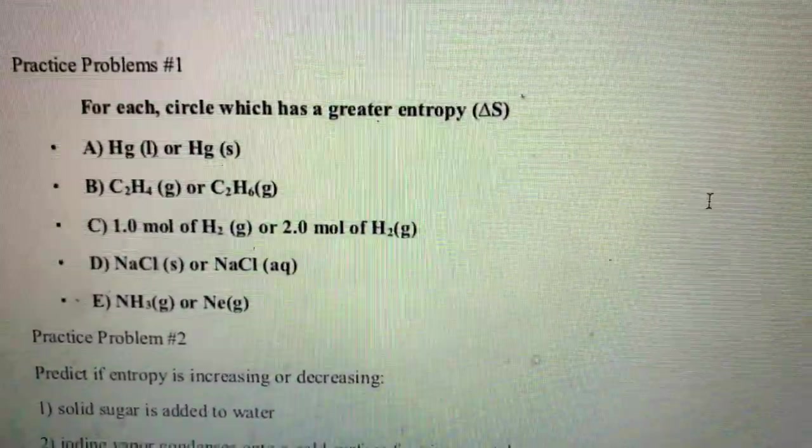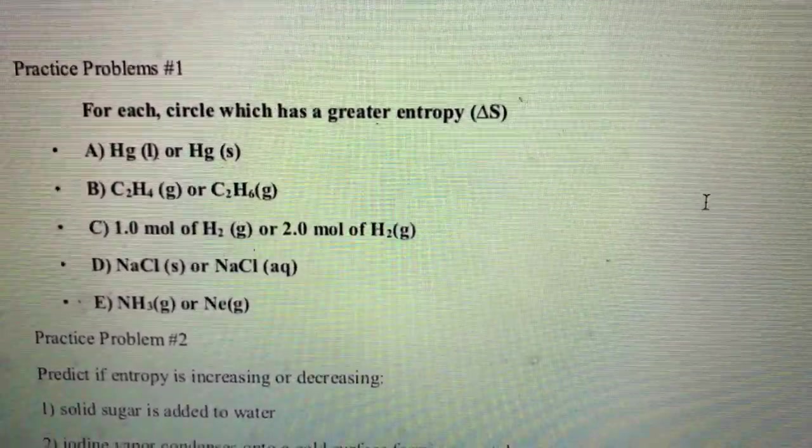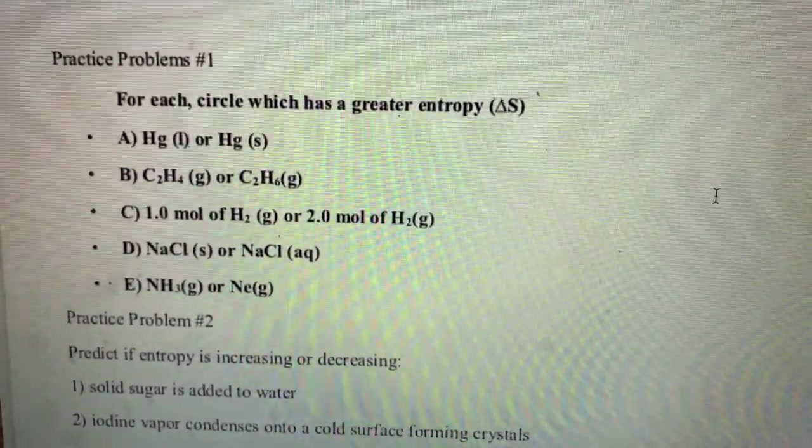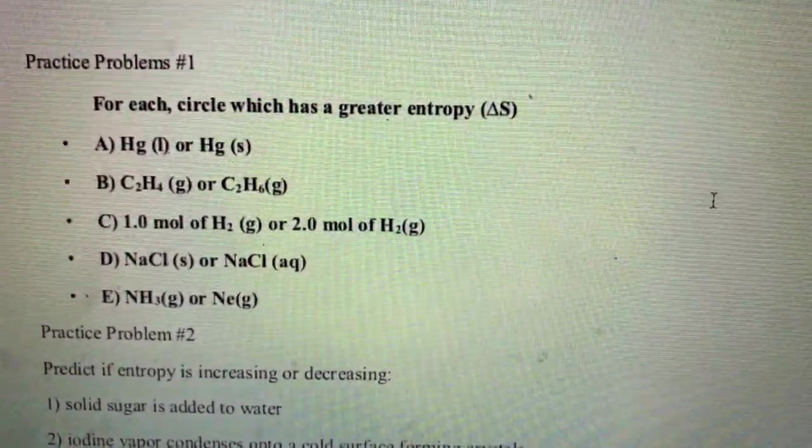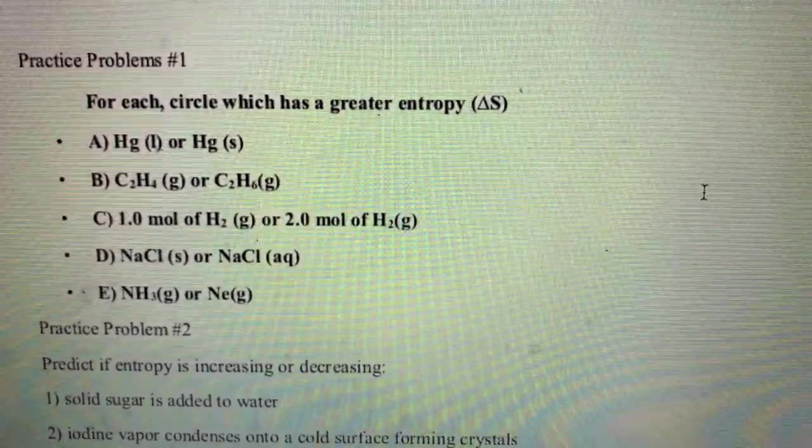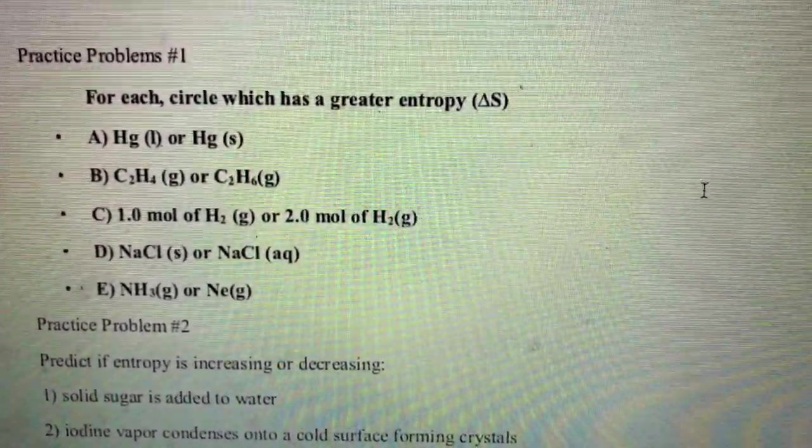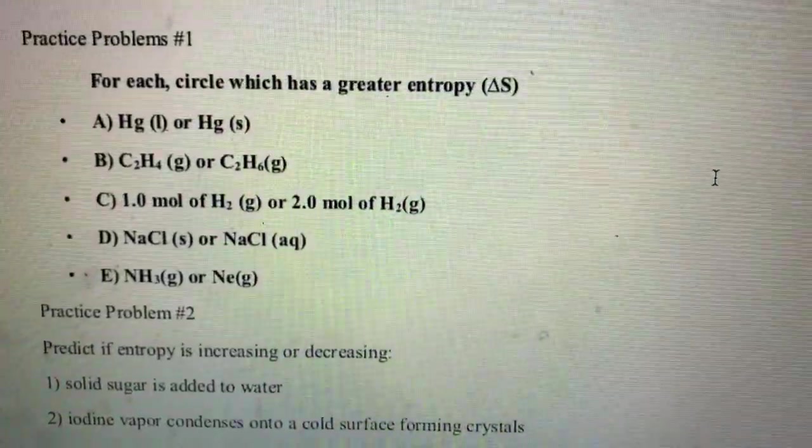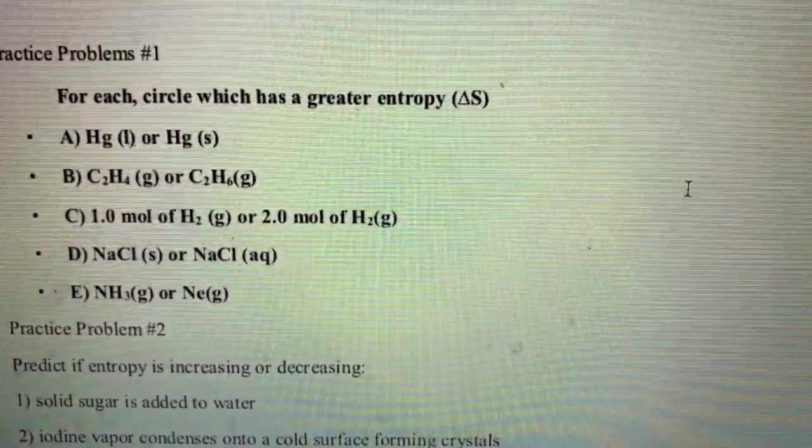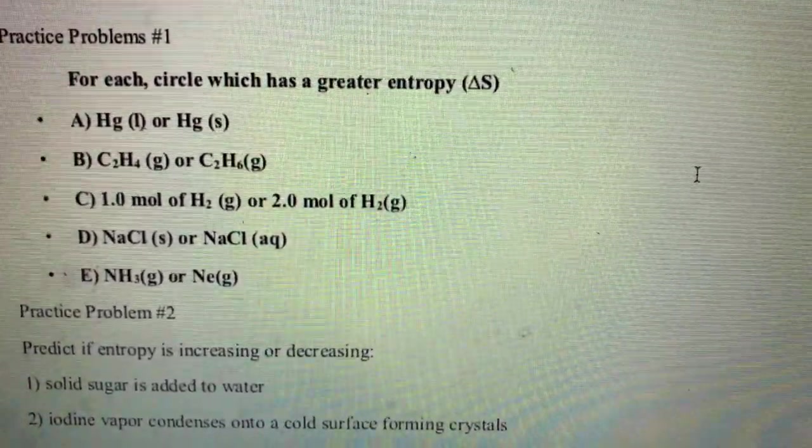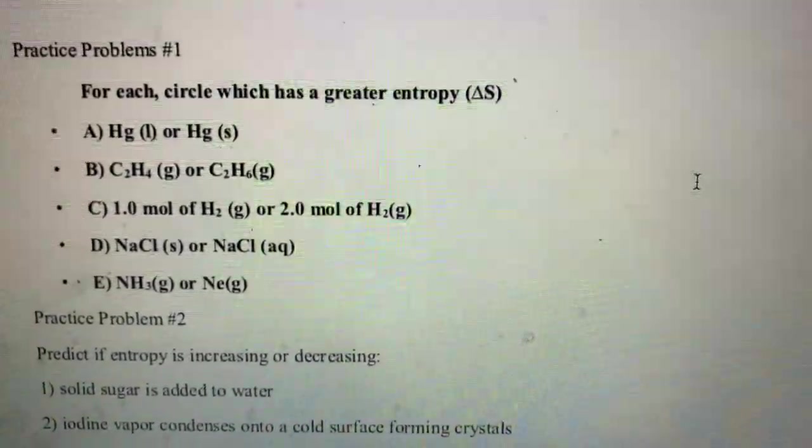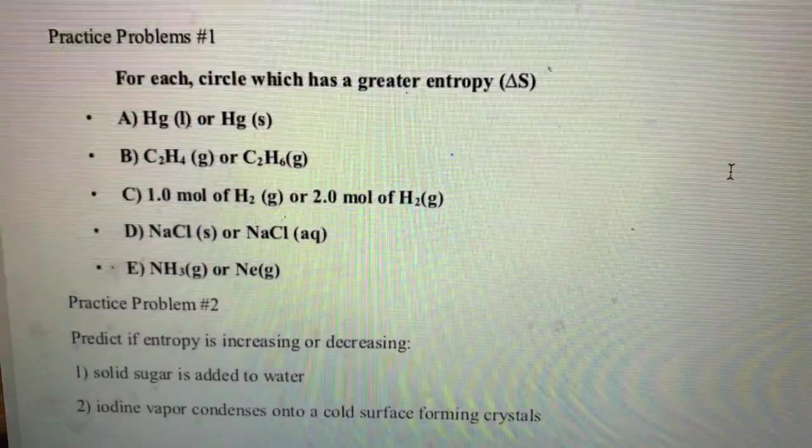For letter A, we're comparing liquid mercury to solid mercury. The greater entropy is always going to be the more disordered or random state, and in this case that's definitely the liquid. For letter B, we're comparing C2H4 with C2H6. They're both gases, so we're not talking about a difference in state, but we're talking about a difference in molecular complexity, and the C2H6 is going to be a larger molecule, so that one has greater entropy.